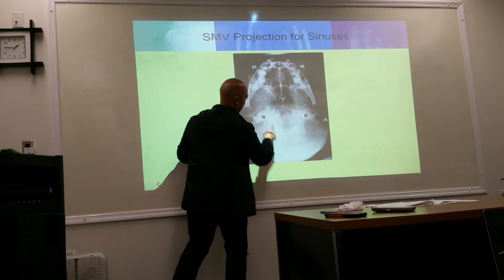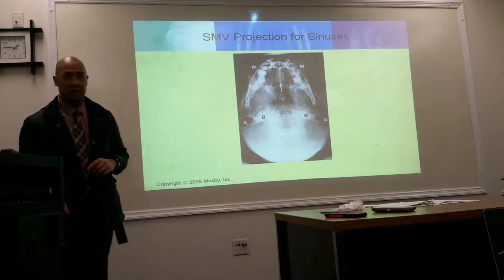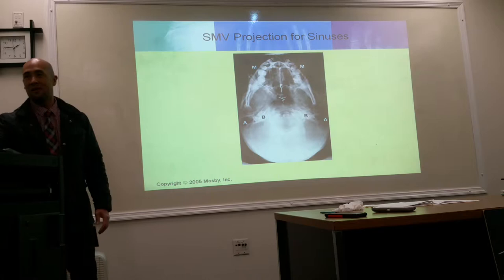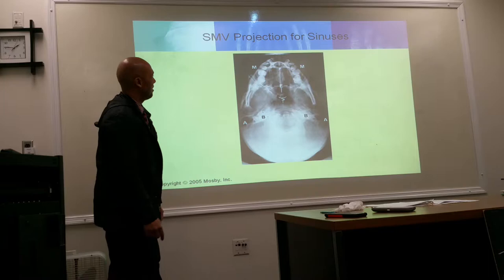The line going down the middle is the vomer. On the SMV image it is identifiable as a vertical midline structure.